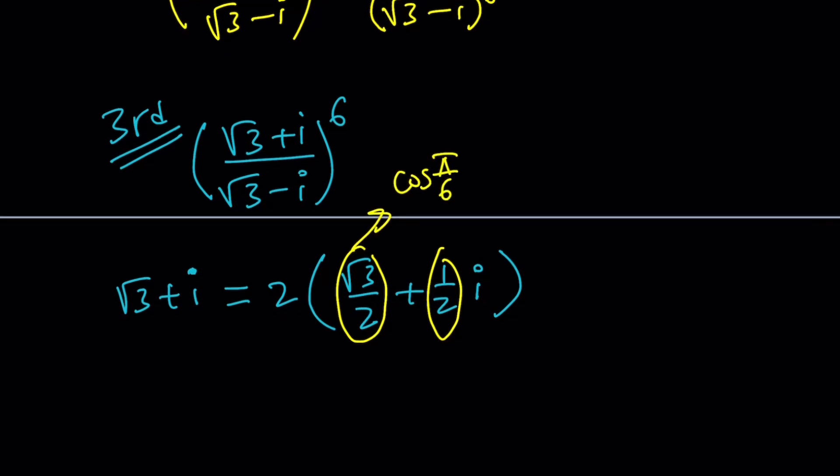Yep. So this is cosine pi over 6. This is sine pi over 6. So our number can be written as 2 times e to the power i times pi over 6 in polar form, in Euler form, in the most compact form. This is just root 3 plus i though.